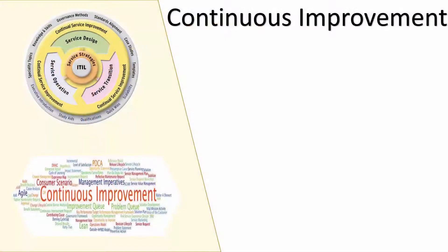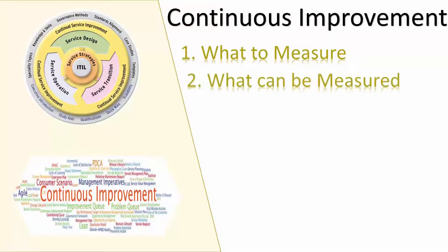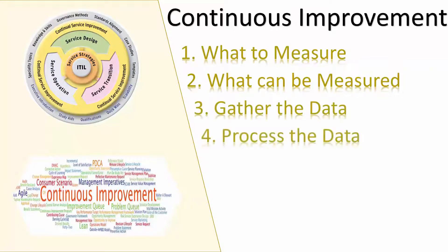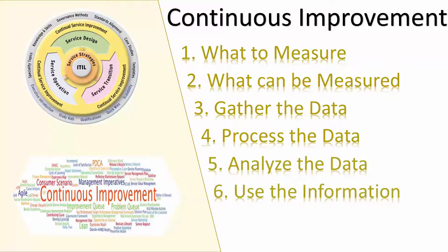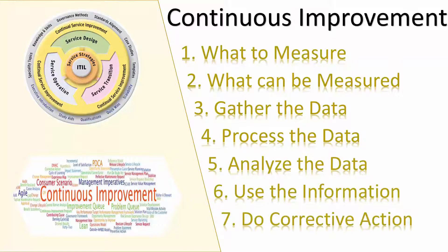The seven continuous improvement steps are: What should you measure? What can be measured? Did you gather data? How do you process the data? Analyze the data. Present and use the information. And then implement a corrective action.